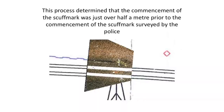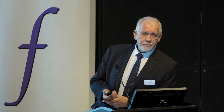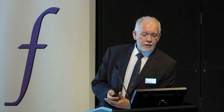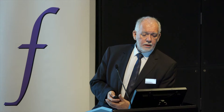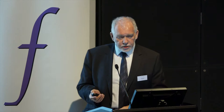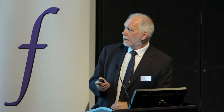That might not seem much, but in this particular case, since the collision would have occurred prior to any tyre scuff mark becoming visible, this led to the conclusion that the collision occurred either on the double white line system or on the correct side of the road for the client's driver — which is substantially different from the view taken by the police. That's a demonstration of how rectifying a photograph can replicate physical marks which can then be measured directly off the plan.